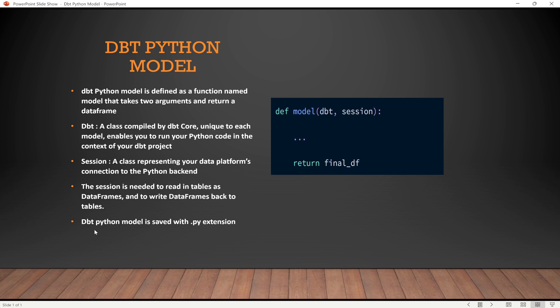A dbt Python model is saved with a '.py' extension, whereas SQL models are saved with a '.sql' extension. Now let me create my first Python model for you.